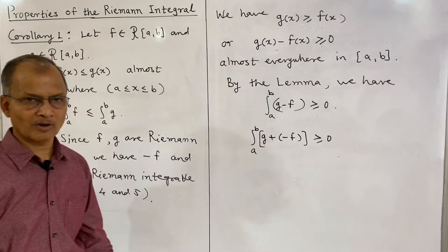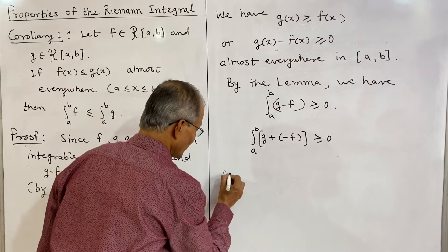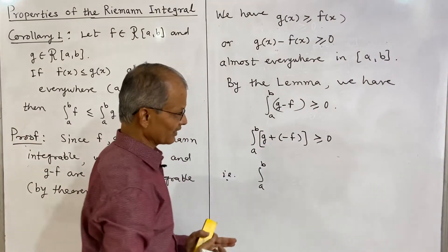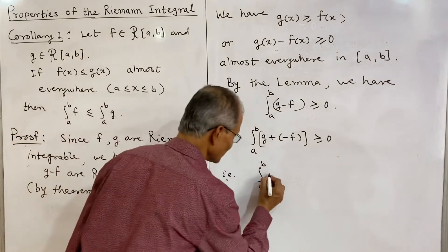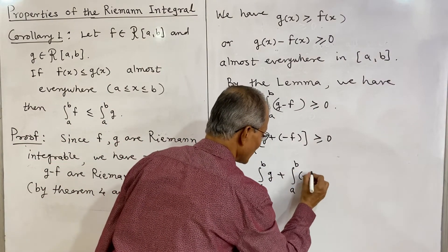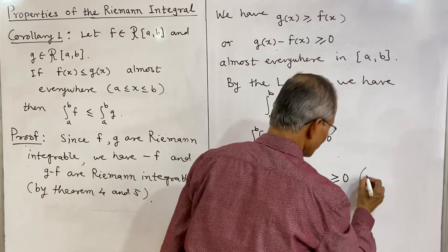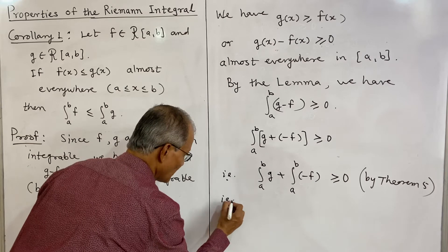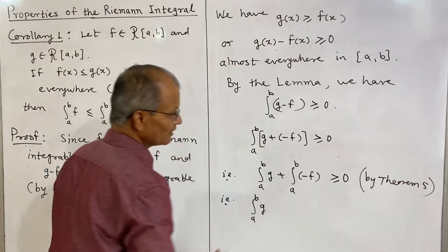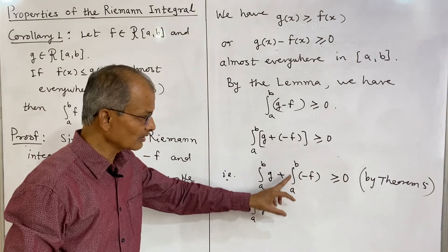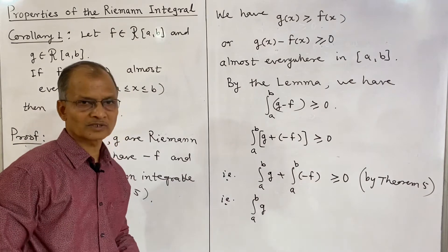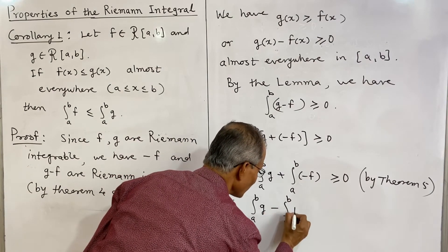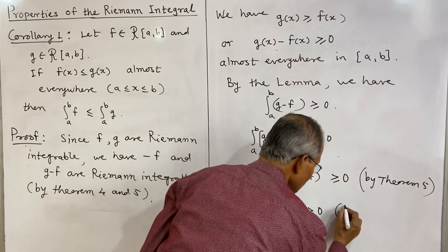This can be expressed as a sum, and using theorem 5 it can be separated as the integral of the first function g plus the integral of the second function minus f, and this is ≥ 0. That is, the integral from a to b of g plus the integral from a to b of (−f) ≥ 0. The integral of (−f) equals negative of the integral of f by theorem 4, so the integral from a to b of g minus the integral from a to b of f is ≥ 0.